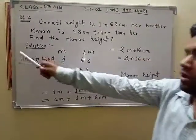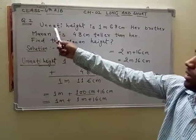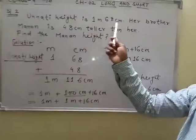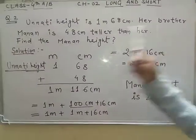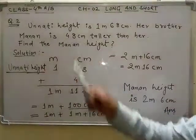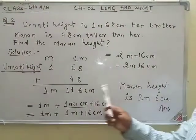Question number 2 is telling us Unnati height is 1 meter 68 centimeter. Her brother Manan is 48 centimeter taller than her.